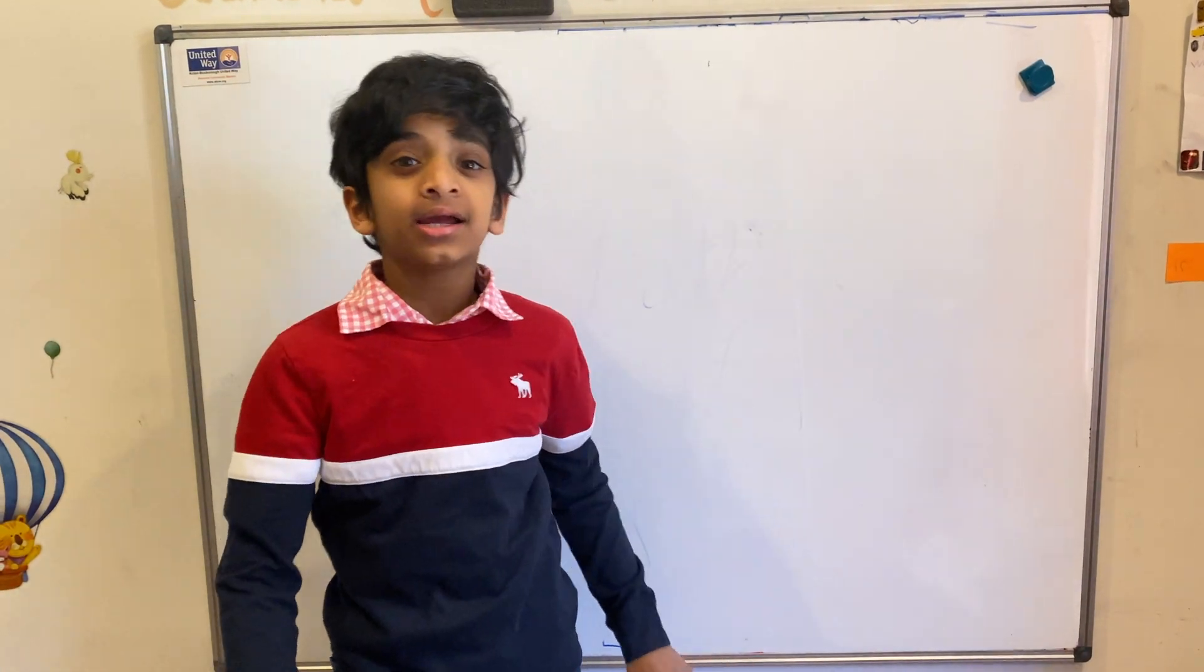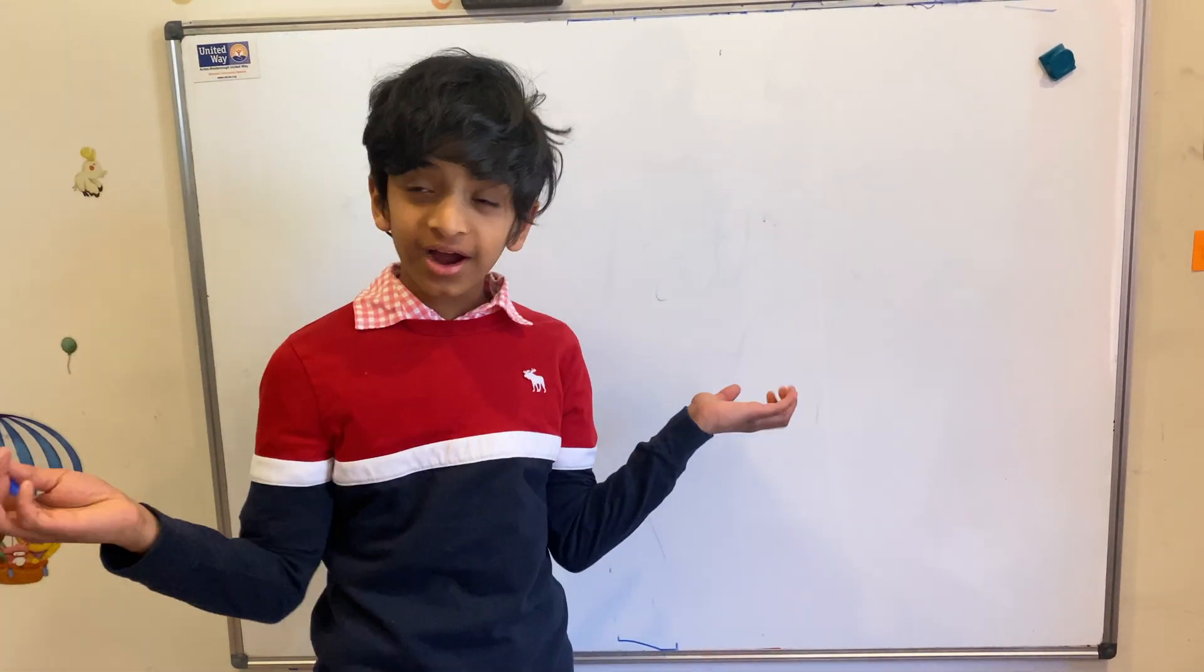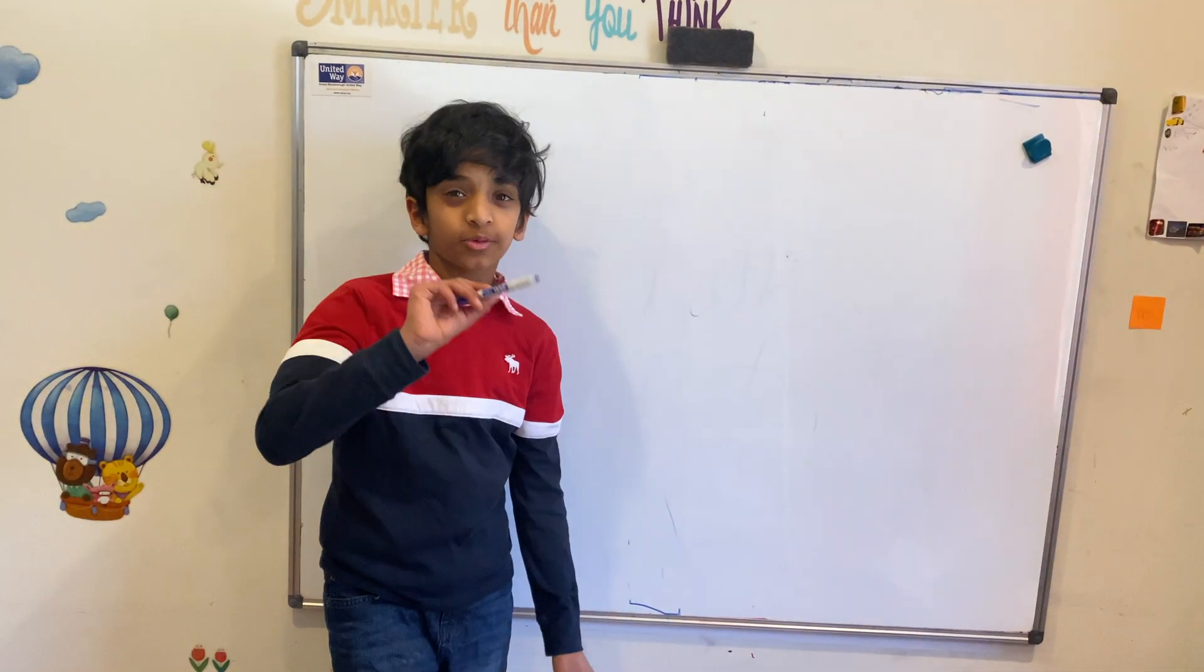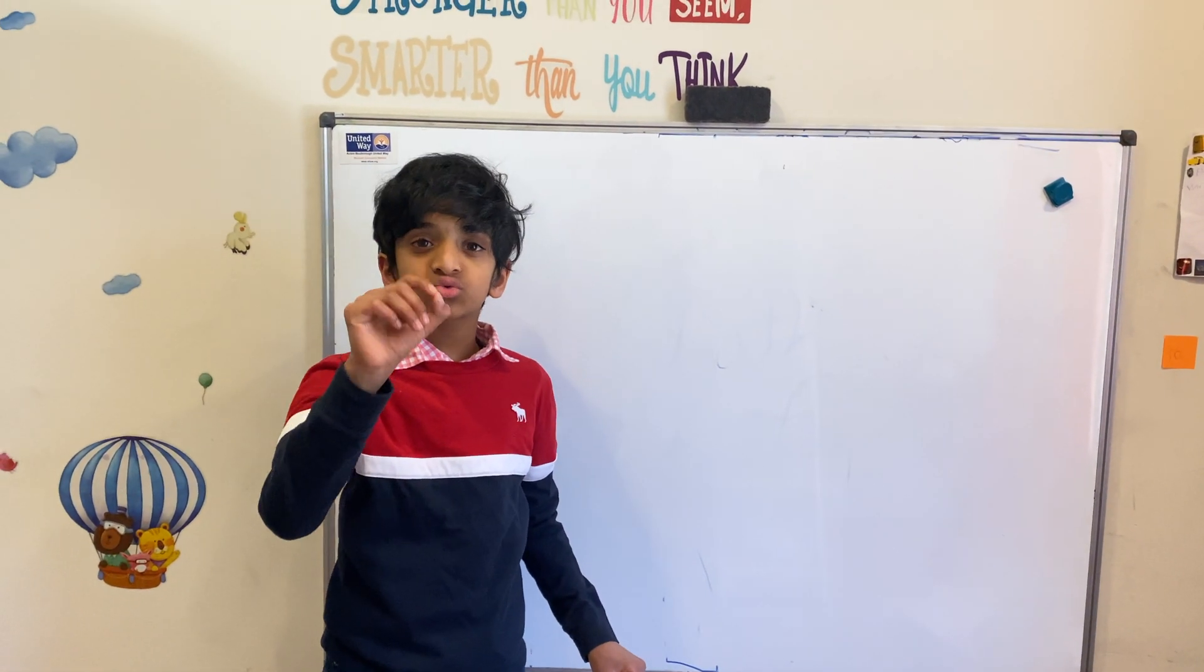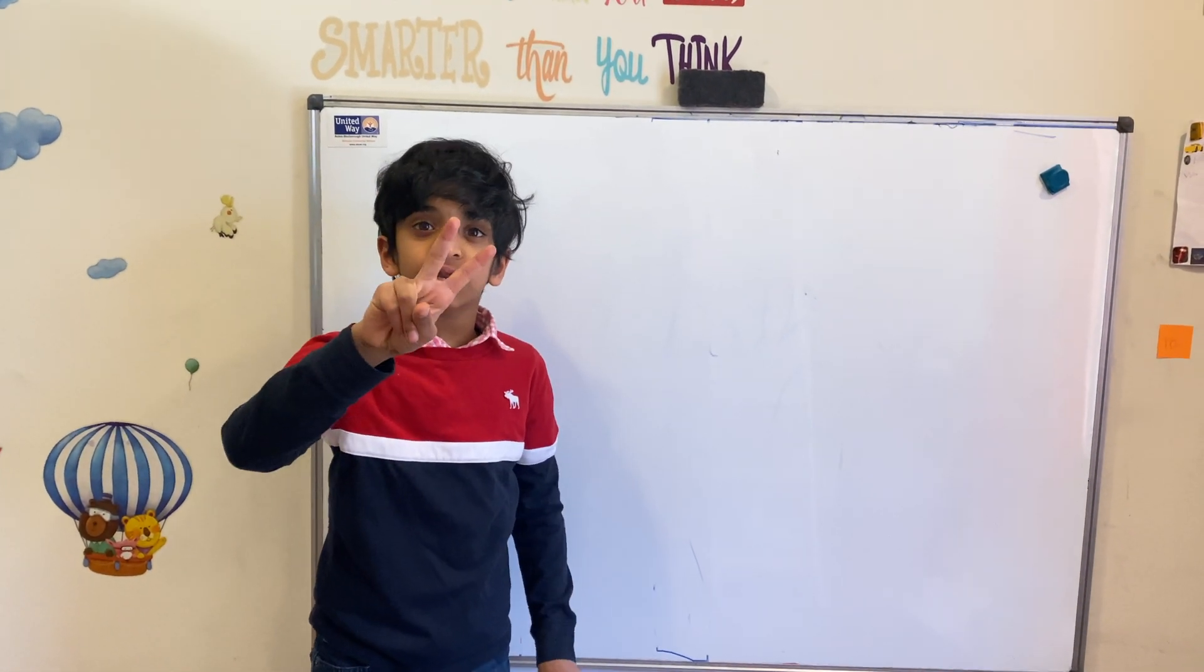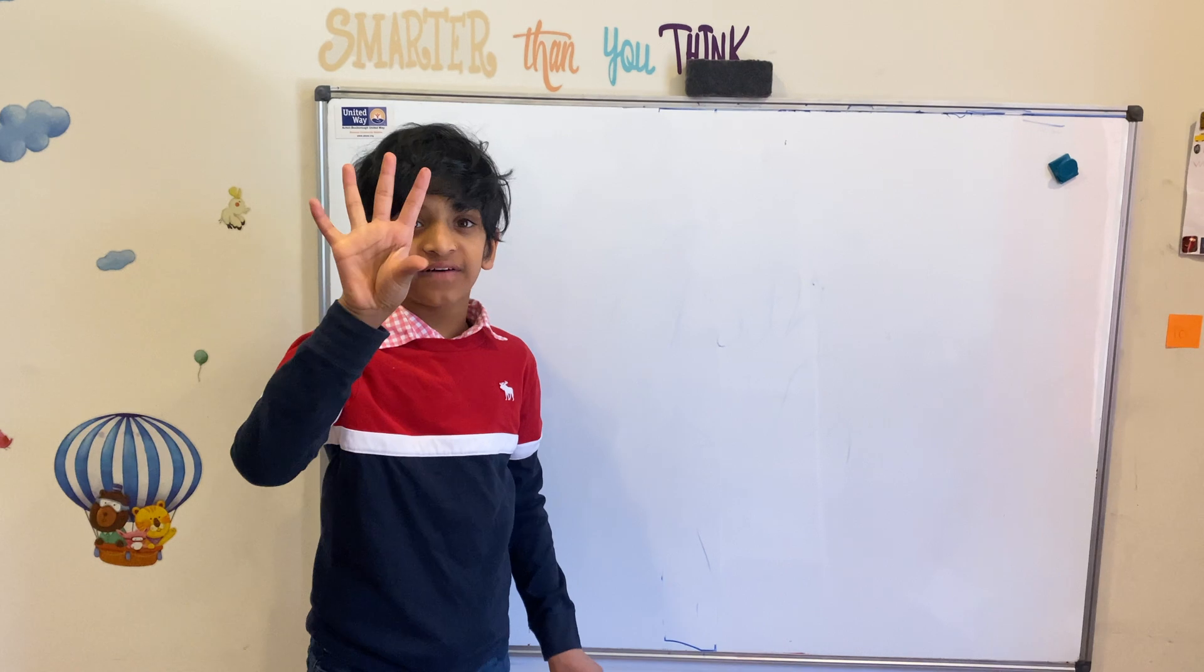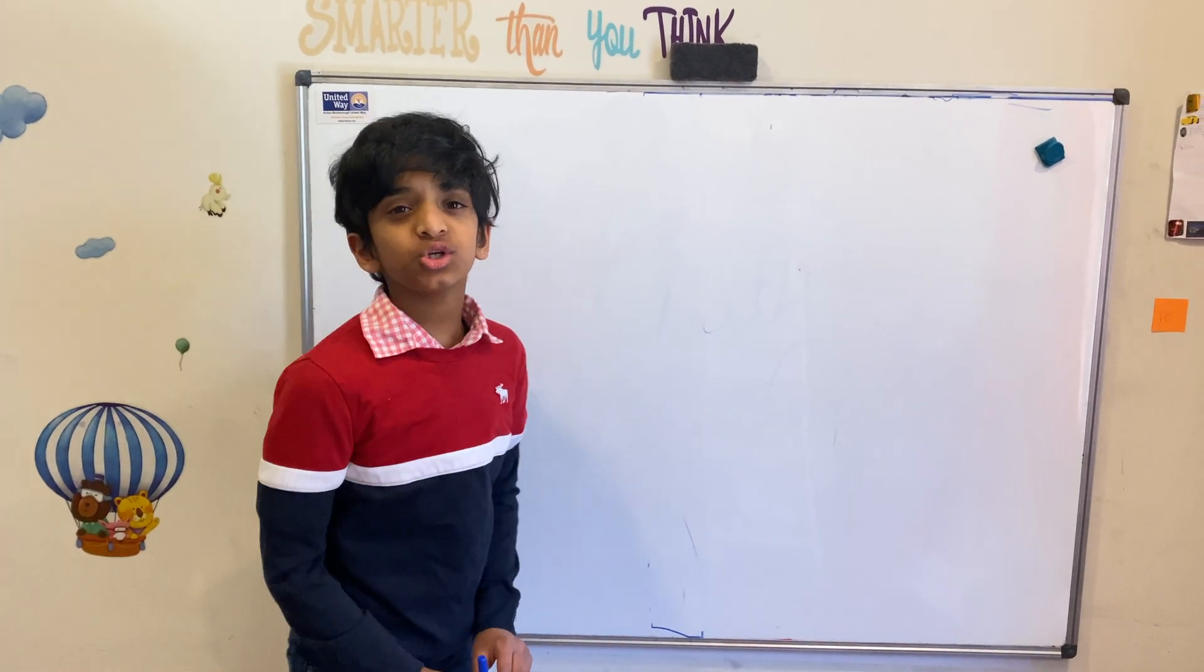Hey guys and welcome back to RBJ's Fun World. Today's another math video. Today's trick we're going to learn is how to do a square on any two-digit number that ends with a five. Let me show you an example.